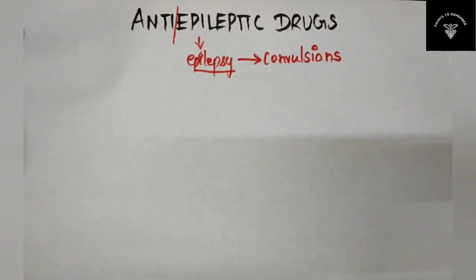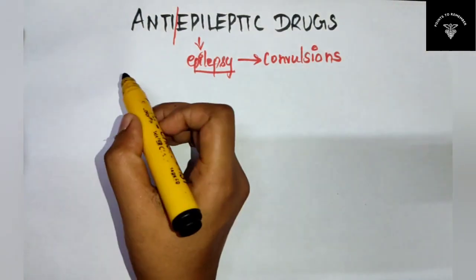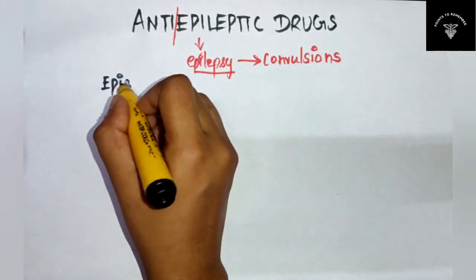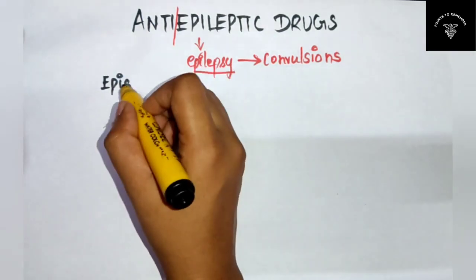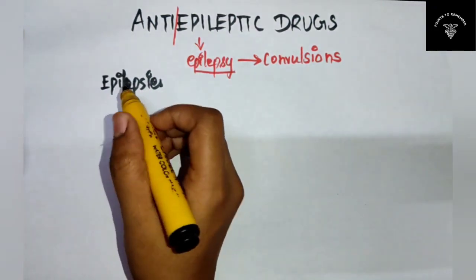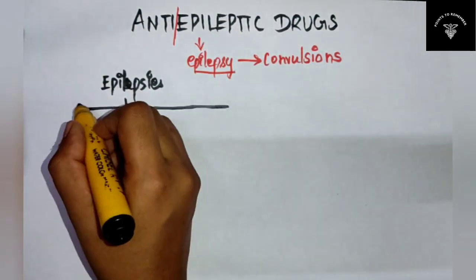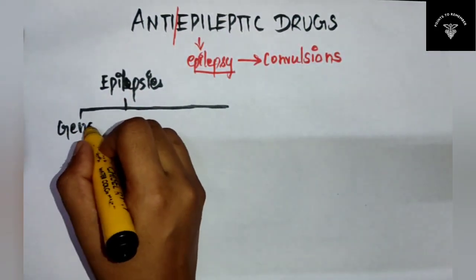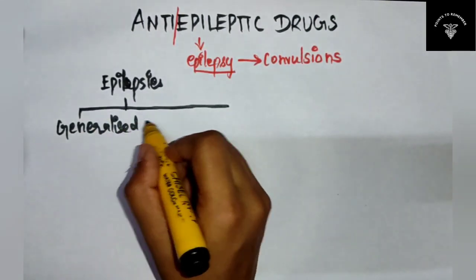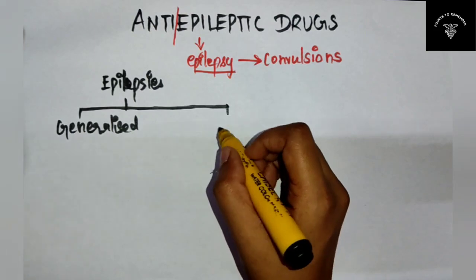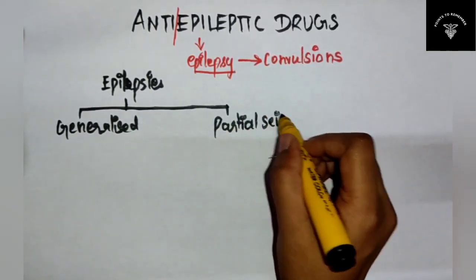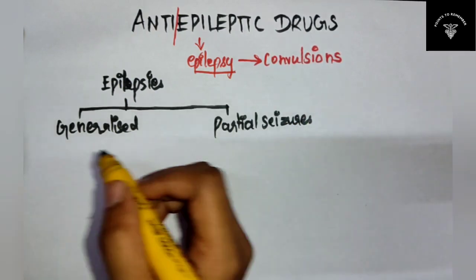Now let's see the types of epilepsy. You have to mention this classification. Epilepsy may be of two types: generalized seizures and partial seizures.